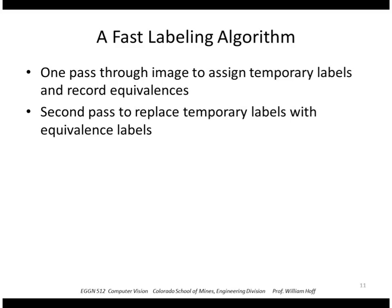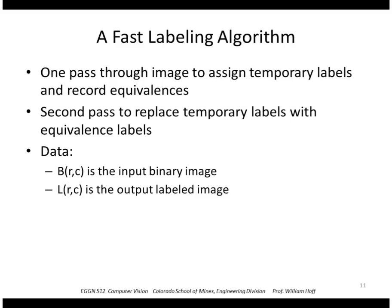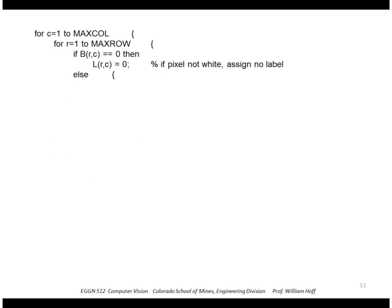So if B is the input binary image, L is going to be our output labeled image. So the algorithm works like this. I'm going to scan through my binary image from left to right, top to bottom, visit each pixel.